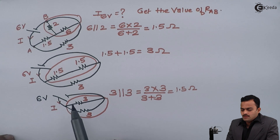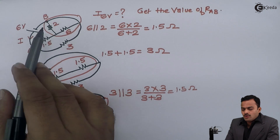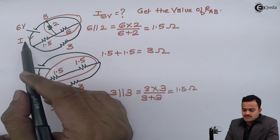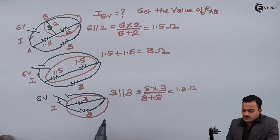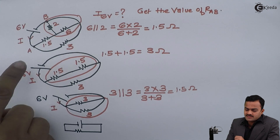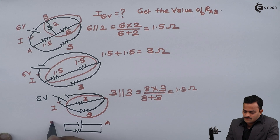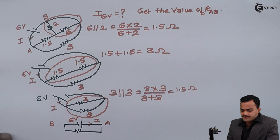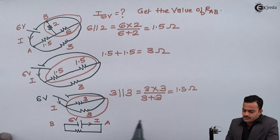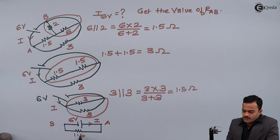Now all the resistors between A and B have been reduced to a single equivalent resistor. There is the 6 volt battery between points A and B, and the equivalent resistance between A and B is 1.5 ohm.